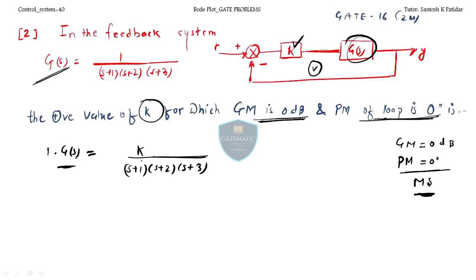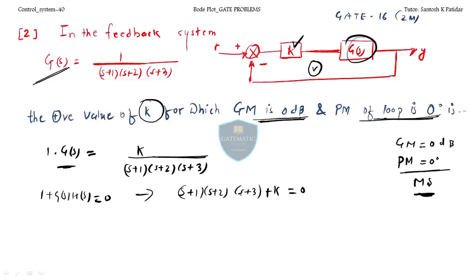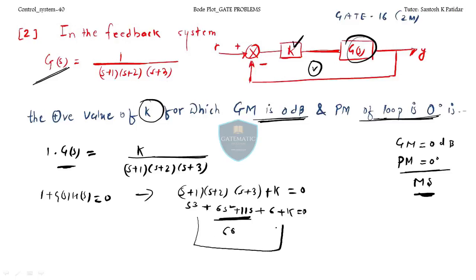We need to find K for marginal stability. Use the Routh-Hurwitz table with the characteristic equation: (s+1)(s+2)(s+3) + K = 0, which expands to s³ + 6s² + 11s + 6 + K = 0. For the third-order system, inside multiplication 6×11 = 66 equals outside multiplication 6 + K, giving K = 10.